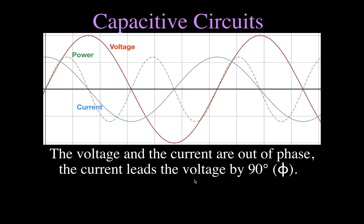In purely capacitive circuits, the current leads the voltage by 90 degrees. You can see in this diagram that the voltage oscillates between positive and negative, the current oscillates between positive and negative, and the power also oscillates between positive and negative values. When we calculate the average power for a capacitive circuit, we use the equation: average power equals RMS voltage times RMS current — we always use RMS values when talking about power — times the cosine of the phase angle phi.